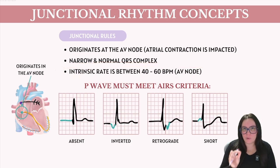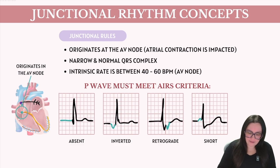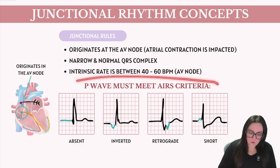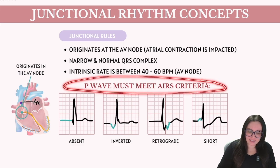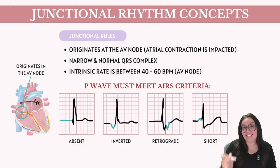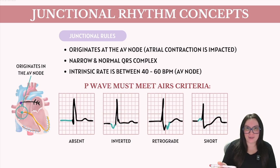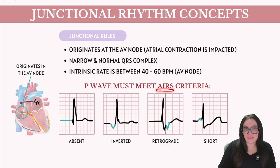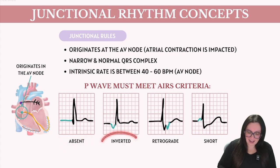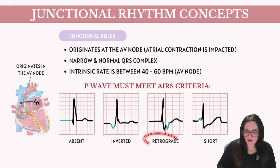What's really important to note is that the P wave must meet one of four criteria in order for it to be deemed a true junctional rhythm. We use the mnemonic AIRS to help us remember that. The A stands for absent, the I stands for inverted, the R stands for retrograde, and the S stands for short.